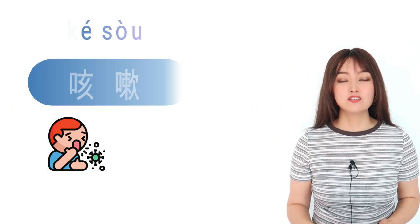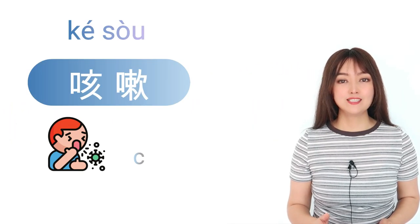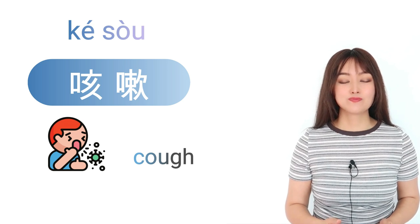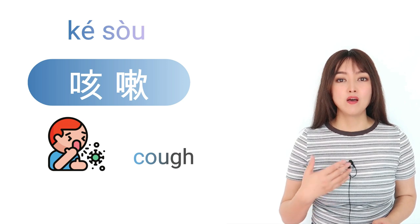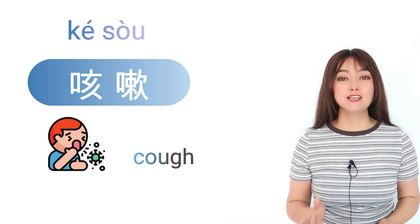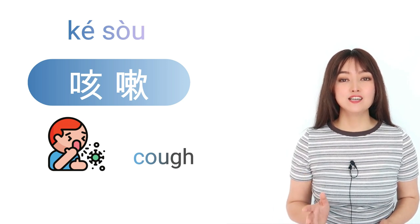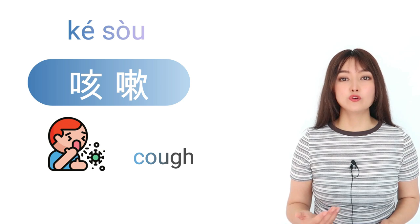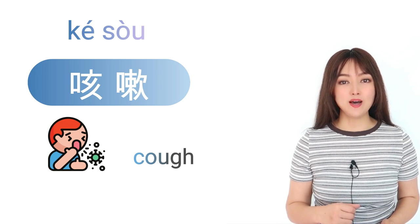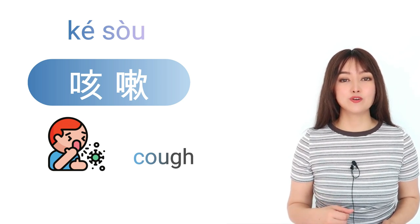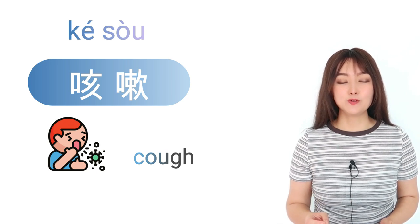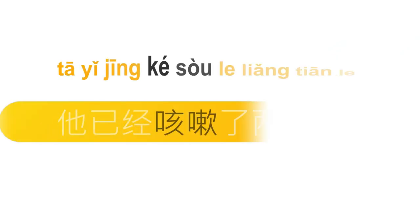咳嗽是 cough。咳嗽。你感冒的时候，你会咳嗽。注意看，咳和嗽都有口字旁。Both of them have the 口 radical, the radical of mouth. 咳嗽。